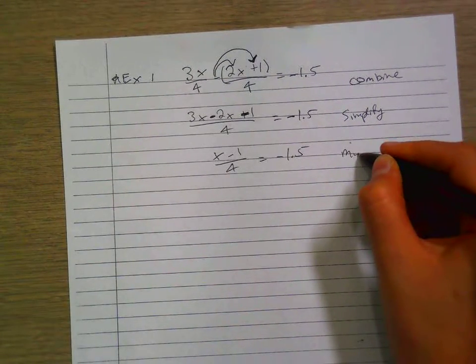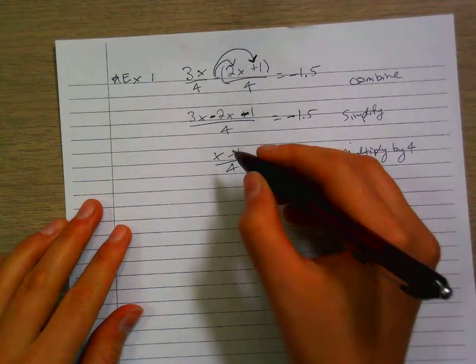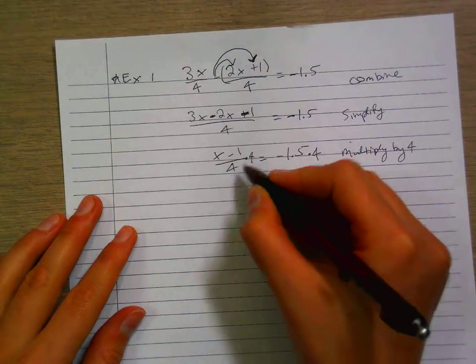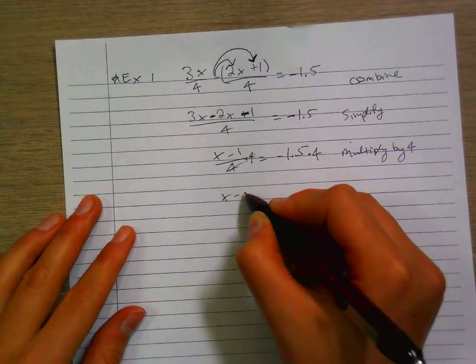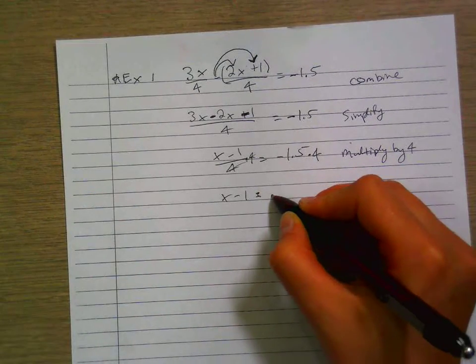Then let's multiply by 4. Multiply by 4, multiply by 4. Those cancel, it becomes x minus 1, and that equals negative 6.